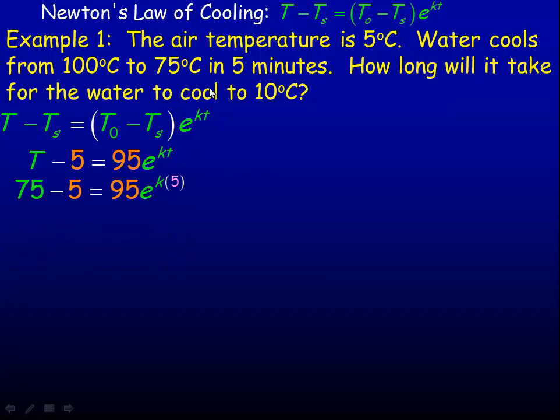Now I'm going to substitute in. It cools to 75 degrees in 5 minutes, so I'm putting 75 in place of T, the temperature. Capital T is temperature at any point in time. We'll put 5 in place of time because in 5 minutes it cools to 75. So 75 minus 5 is 70, giving us 70 equals 95e to the 5K.